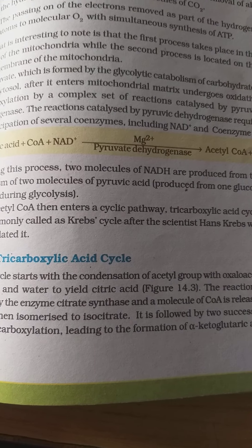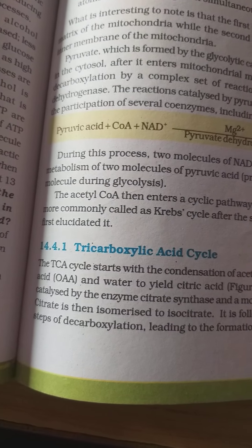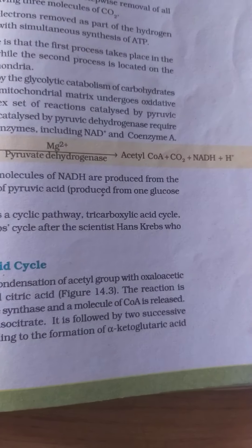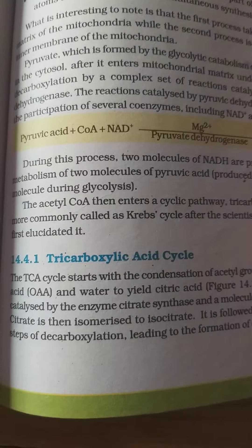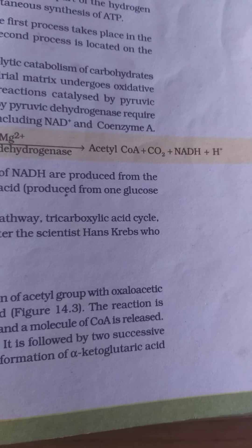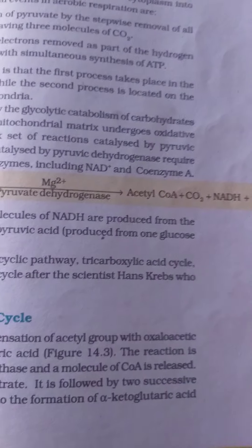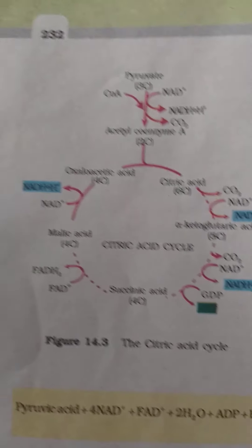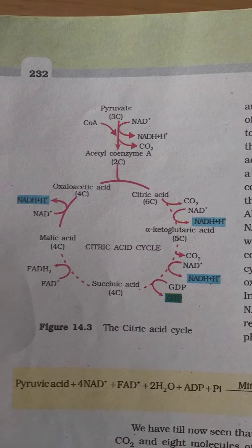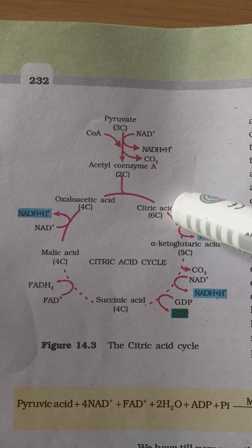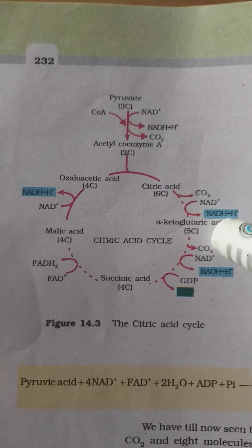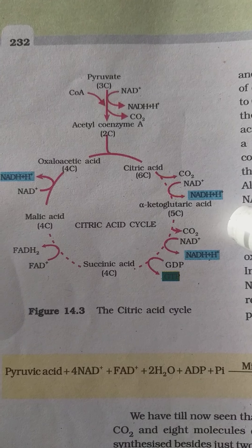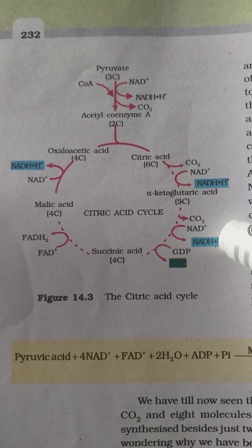The reaction is catalyzed by the enzyme citrate synthase, and one molecule of coenzyme A is released. The citrate is then isomerized to isocitrate, followed by two successive steps of decarboxylation leading to the formation of alpha-ketoglutaric acid. So from pyruvic acid, a three-carbon compound, acetyl coenzyme A is formed, which mixes with water and OAA to produce citric acid, which then releases CO2 and NAD and is converted into alpha-ketoglutaric acid.